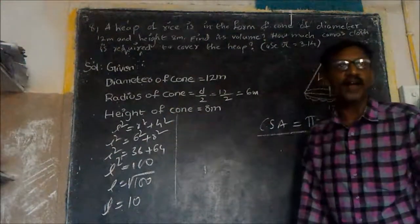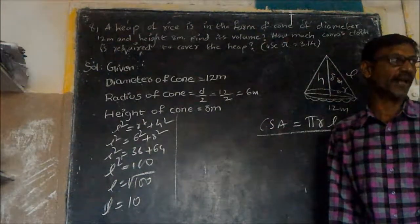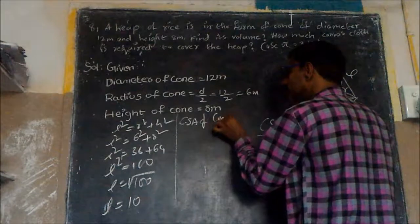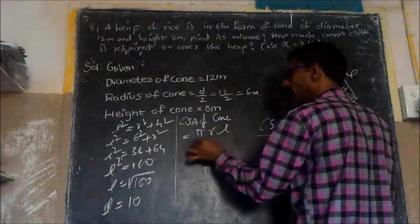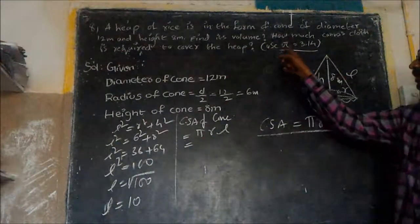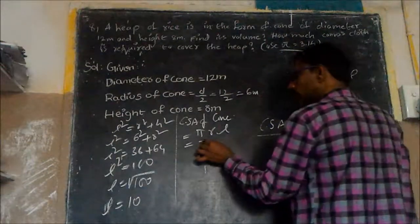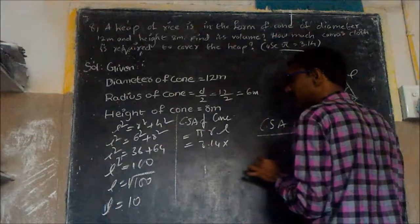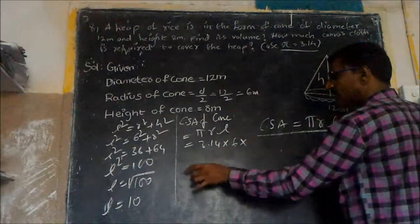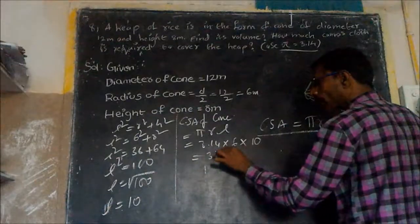Now we are going to find the curved surface area of the cone that helps to cover the heap of rice. Curved surface area equals pi R L. Taking pi as 3.14, radius as 6, and slant height L as 10: 3.14 multiplied by 10 gives 31.4, and then multiplied by 6.